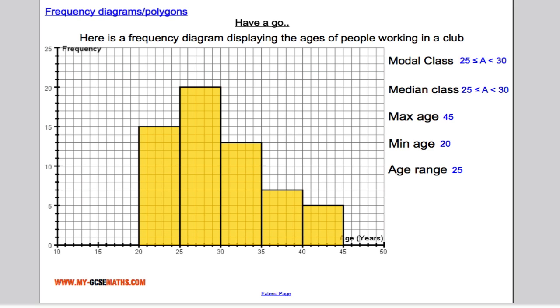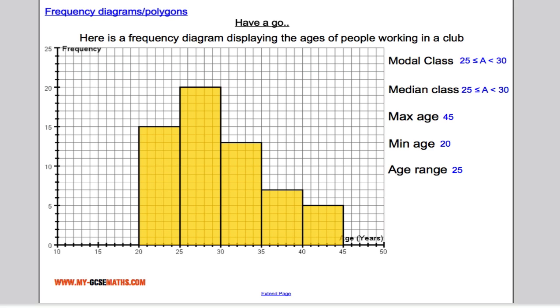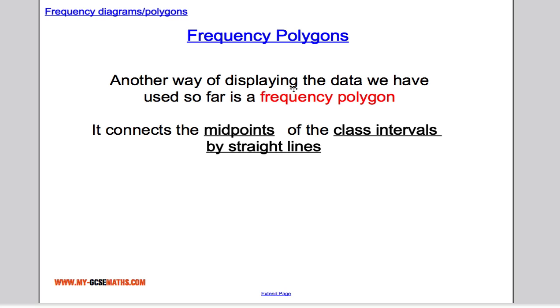Let's take a look at frequency polygons now. Frequency polygons is just another way of displaying data that's continuous and has equal class widths. Basically what it does is it connects the midpoints of all the class intervals by straight lines. So let's take a look at our first example again.